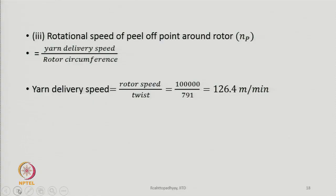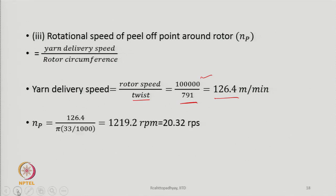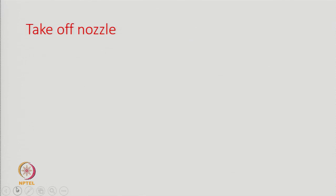The rotational speed of the peel-off point around the rotor is the yarn delivery speed divided by rotor circumference. Yarn delivery speed equals rotor speed divided by twist: 100,000/791 = 126.4 meters per minute. Therefore, the peel-off point rotation is 126.4 divided by (π × 0.033 meters), giving 1219.2 rpm or 20.3 revolutions per second.